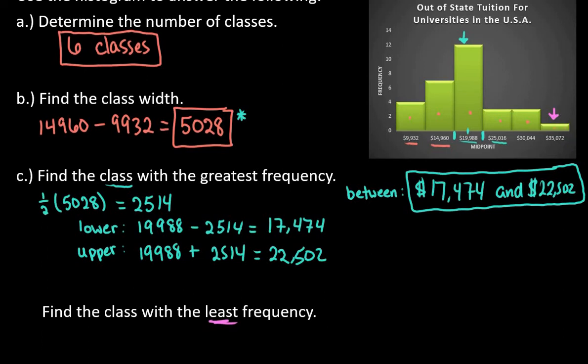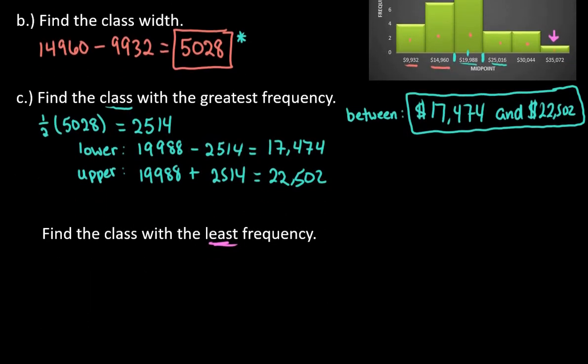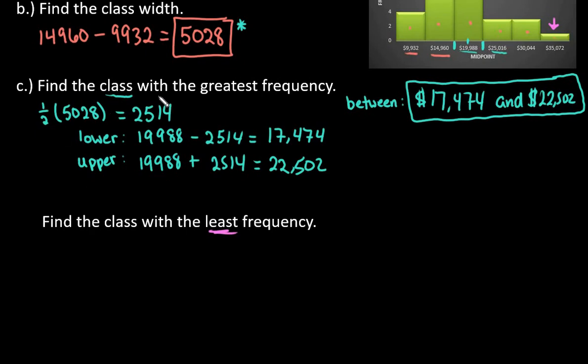We're going to use the same number because remember the class width is the same for all of them. Half of it would still be the same, so we're going to find half of our distance here, half of our distance here.